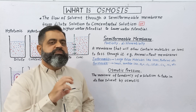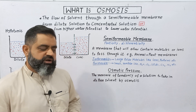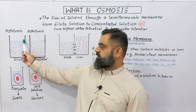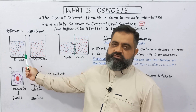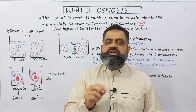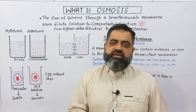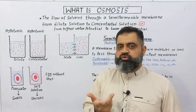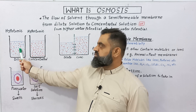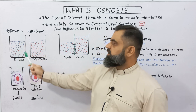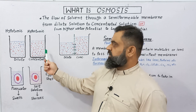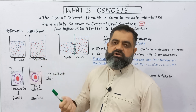Now we are going to describe osmosis through an experiment. I have taken a beaker which contains solvent — usually pure water. Pure water has maximum water potential, which is regarded as zero and is described by the Greek symbol psi (ψ = 0). I have added some solute to it, so this solution is a dilute solution, usually known as a hypotonic solution.